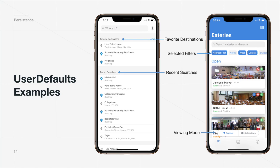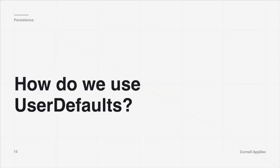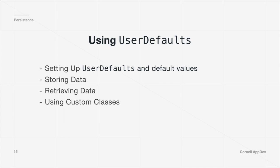Some examples of information you might want to store in UserDefaults include application settings, application flags, small pieces of user information and preferences, or indicators for how your app should behave at startup. You can store basic data types like booleans, floats, doubles, integers, and strings, but also more complex types like URLs, arrays, and dictionaries. AppDev uses UserDefaults in Transit and Eatery for things like favorite destinations, recent searches, selective filters, and viewing modes.